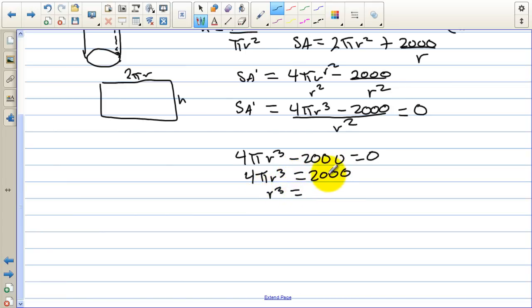So we have 4 pi r to the third equal 2,000. r to the third equals, let's see, 2,000 divided by 4 is 500 over pi. And then finally, r is going to be the third root of 500 over pi. And that value is 5.42.